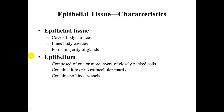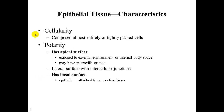Looking at epithelial tissue specifically, it is composed of one or more layers of closely packed cells that have little or no extracellular matrix — meaning there is very little or no space outside of or between the cells. Therefore, they do not contain blood vessels; they are said to be avascular. The cells are composed almost entirely of tightly packed cells, one right next to the other.